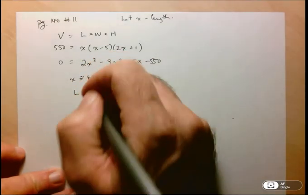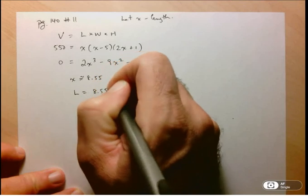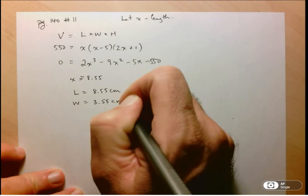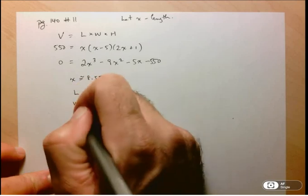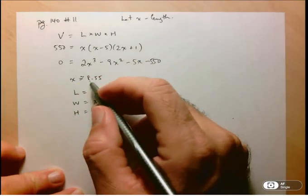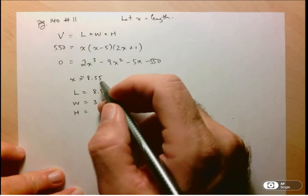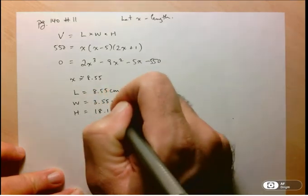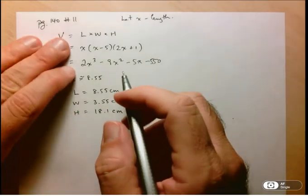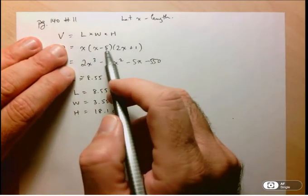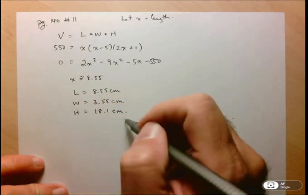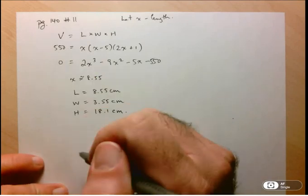So we know the length was just equal to x, so that's 8.55 centimeters. The width is 5 less, so 3.55 centimeters, and then the height is 2 times 8.55, so 17.1 plus 1 should be 18.1 centimeters. So here we have the equation for the volume, and here we have the answer to part 2, which is dimensions for a volume of 550.